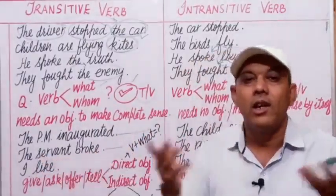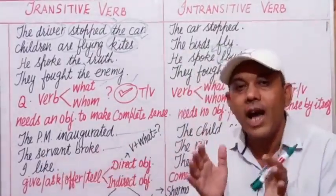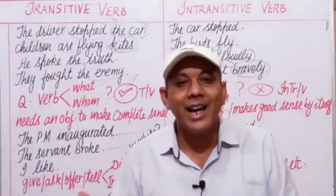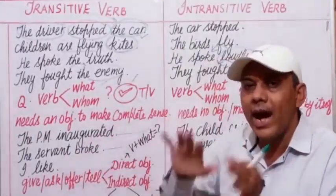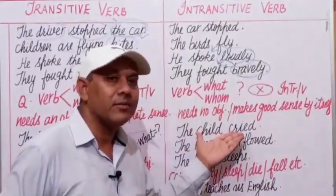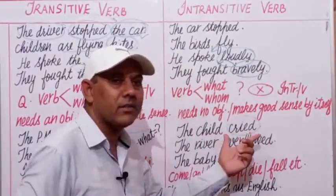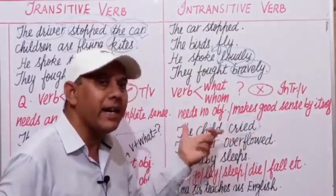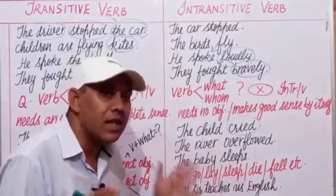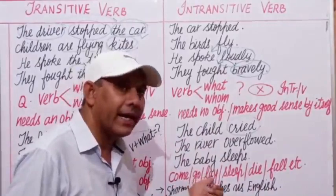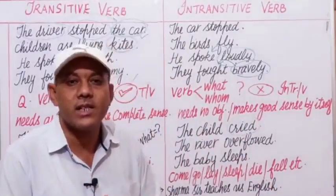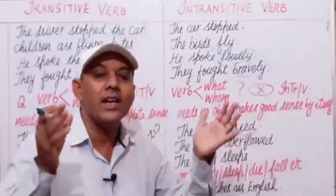'I like' has no complete meaning — I like what? We add: I like chocolates, I like pizza, I like fruits. In contrast, 'The child cried' needs no object to complete its meaning — it has complete meaning by itself. 'The river overflowed,' 'The baby sleeps' — some verbs like come, go, lay, sleep, die, fall, etc. need no object and are known as intransitive verbs.